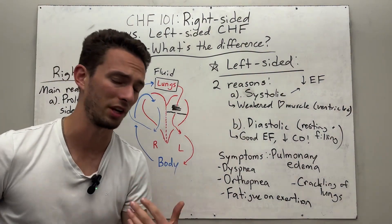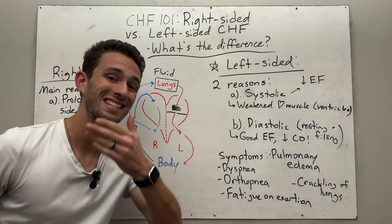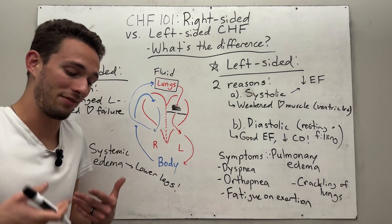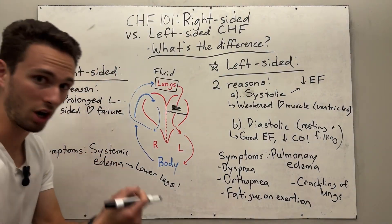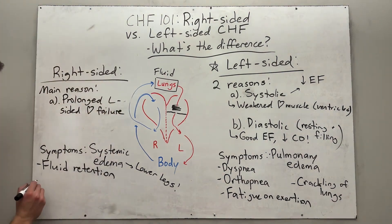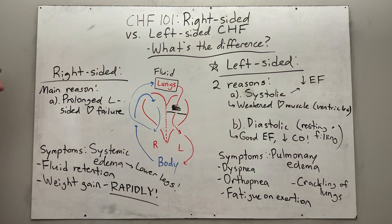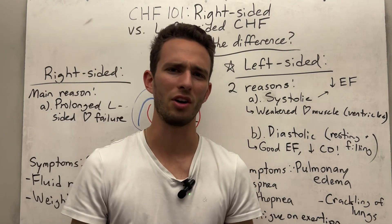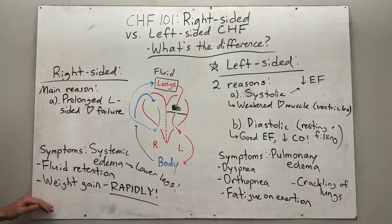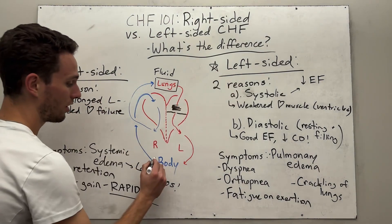Right-sided heart failure is otherwise uncommon since the right side only pumps to the nearby lungs. Its most common symptom is systemic edema — fluid and swelling in the extremities, usually the lower legs, because gravity pulls fluid down when the heart can't efficiently return it. You'll also see fluid retention and rapid weight gain — up to two to three pounds of fluid in a single day. This is why monitoring weight and fluid intake is essential for patients with right-sided heart failure.